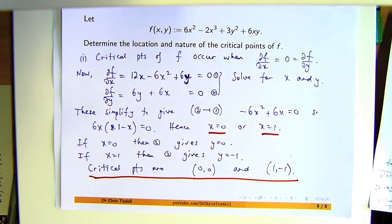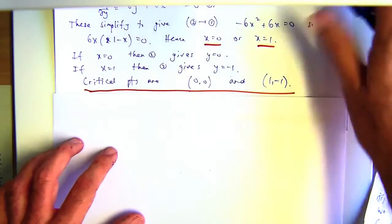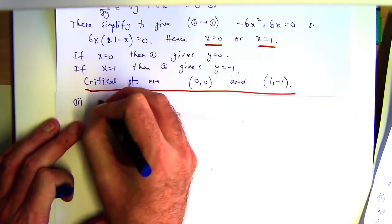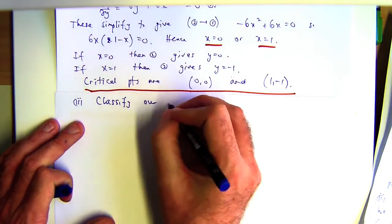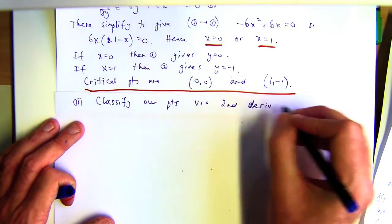The second part is where you want to show what is their nature. At those points, what happens with our surface or our function of two variables? Do you get a local minimum, a local maximum, or something in between? A point of inflection, which is kind of like, you can relate that back to high school maths where you talk about a point of inflection. In this setting, we call it a saddle point. So let's classify our points now via the second derivative test.